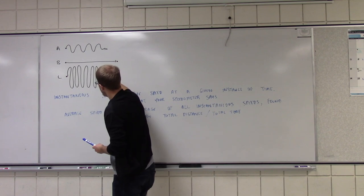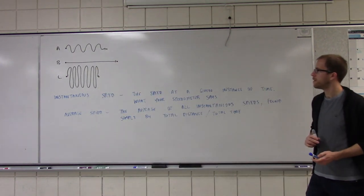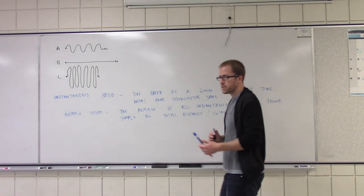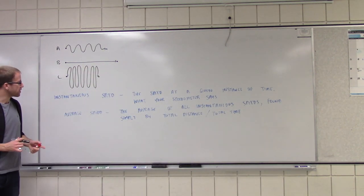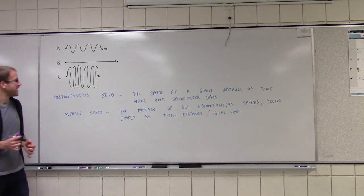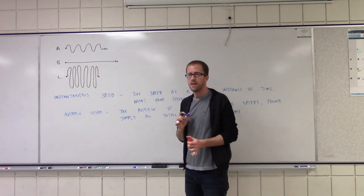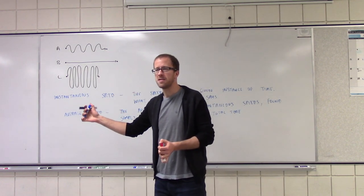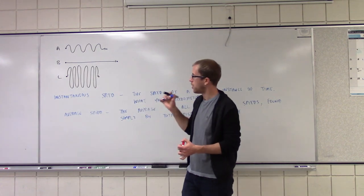Alright, there's path C. So these are three paths that were walked to school. This individual is clearly a little drunk here — ten steps to the left, ten steps to the right. But if we look at these three paths, let's compare now their average speed versus their velocity.